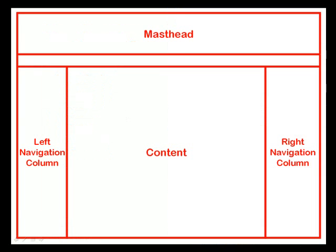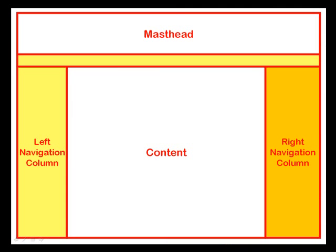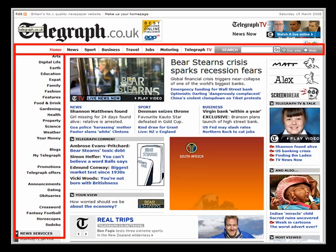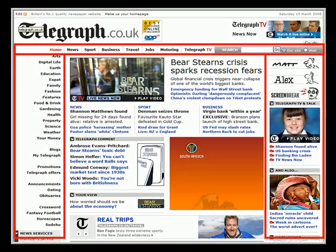On every website page, the main navigation should be in the left-hand column, the secondary navigation should be at the top, and these two navigation elements should remain the same on every page of your website. The right-hand navigation can change on every page to link readers to content that is relevant to the page they're reading. We can see this navigation format clearly shown on the Telegraph website: the constant left navigation column, the constant top navigation bar, and the content-relevant links in the right-hand column.